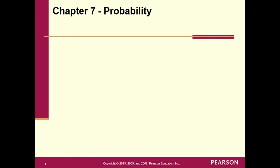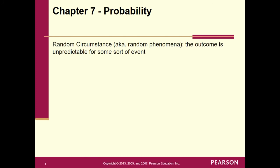Good day, stat students. Today we're going to go over Chapter 7, Probability, and this is long enough that we've got to separate this into two parts, so this is part one. Let's talk about a random circumstance, or what we call random phenomena. This book uses 'random circumstance,' so that's where we'll start.